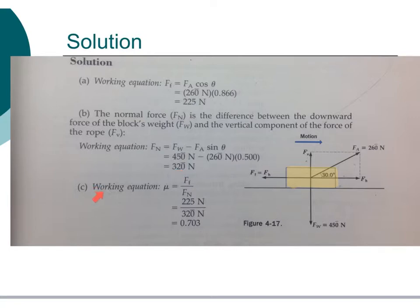Finally, we determine the coefficient of friction by dividing the force of friction from part A, which was 225 N, by the vertical component, which was 320 N. Our coefficient of friction is 0.703. You'll notice that there are no units associated with the coefficient of friction.